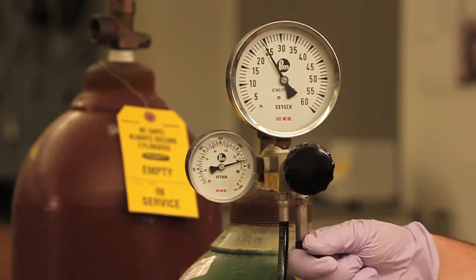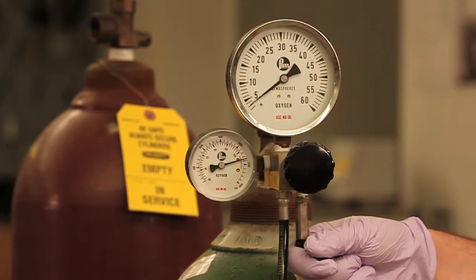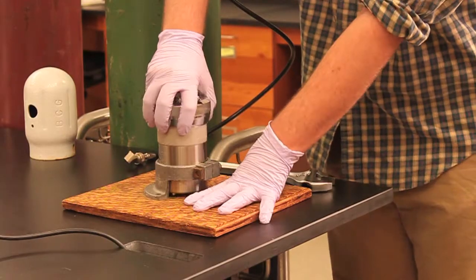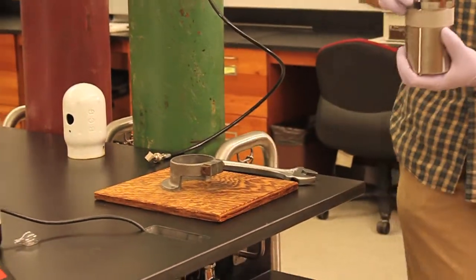Release the pressure by using the black toggle switch and remove the filling adapter. With the bomb prepared, you can now prepare the calorimeter.